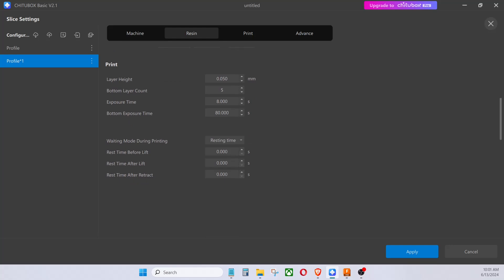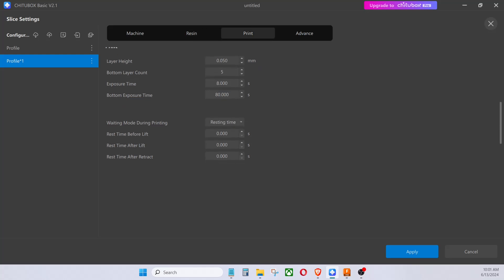These are all the layer height settings. It's 0.050. Bottom layer counts 5. Exposure time 8 seconds. Bottom exposure time 80 seconds.